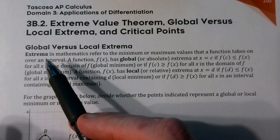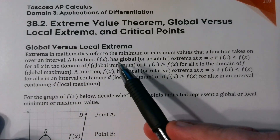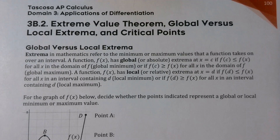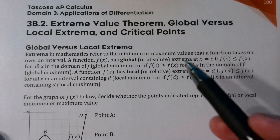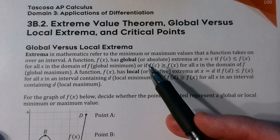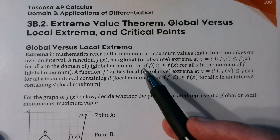We need to understand the definition of the word extrema. Extrema refers to either the minimum or maximum values that a function takes on over an interval. We say that it has a global or absolute extrema at x equals c if f(c) is less than or equal to f(x) for all x in the domain of f — that's a global minimum — or if it's greater than f(x) for all x, that's a global maximum. A global maximum is the absolute highest value; a minimum is the absolute lowest.